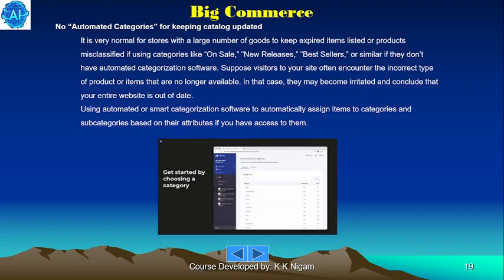There are also no automated categories for keeping the catalog updated. It is very normal for stores with a large number of products to keep expired items listed or products misclassified when using categories like 'On Sale,' 'New Releases,' or 'Best Sellers,' if they don't have automated categorization software. If visitors to your site often encounter the wrong type of product or items that are no longer available, they may become irritated and conclude that your entire website is out of date. You should use automated or smart categorization software to automatically assign items to categories and subcategories based on their attributes.